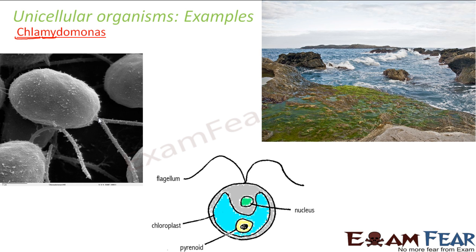When you look at the cell structure of chlamydomonas, this entire structure is just one single cell, which constitutes the entire body of the organism. Inside this cell you have a nucleus — you may recall that scientist Robert Brown discovered that there is a nucleus inside every cell. The different parts of the cell will be discussed in detail in later lessons.